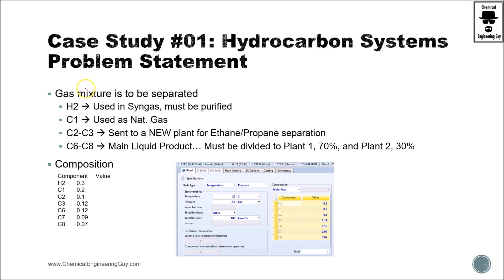This is a very common example in the chemical and petrochemical industry. It's about a gas mixture that must be separated. So we have hydrogen gas, methane, ethane, propane, hexane, heptane, and octane.